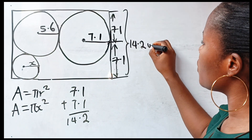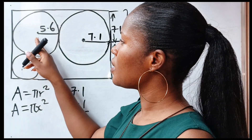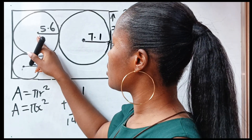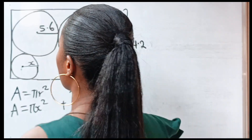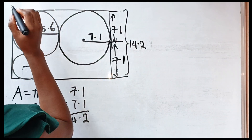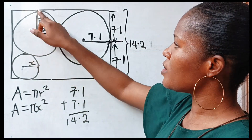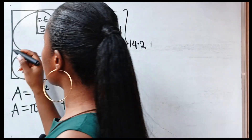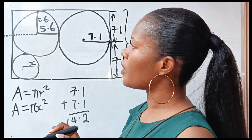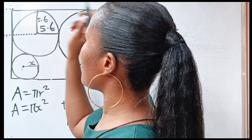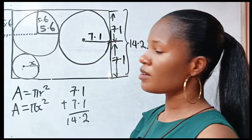So we have 14.2 units here. The radius of this circle is 5.6. That means if I draw a straight line from here to the center, this is also 5.6, because from here to here is also the radius of this circle. If I drop a straight line like this and another straight line, it means that from here to here is 5.6 as well.